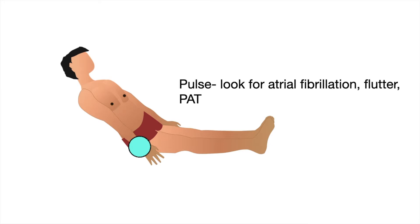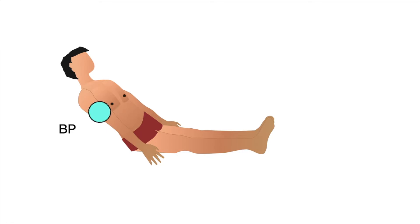On examination, we look at the pulse and we look for atrial fibrillation, flutter, and paroxysmal atrial tachycardia. The blood pressure is examined in both the upper limbs and one lower limb.